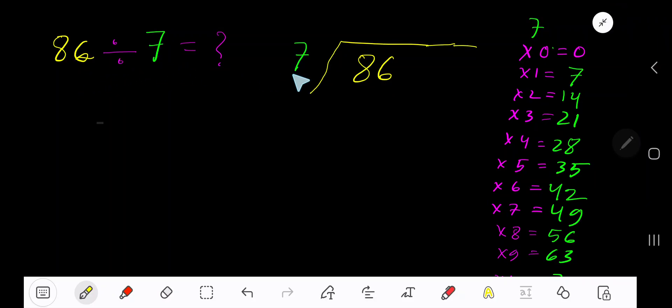86 divided by 7. Here 7 is a divisor, so we need the multiplication table of 7. 7 times 0 is 0, 7 times 1 is 7, 7 times 2 is 14, 7 times 3 is 21, 7 times 4 is 28.